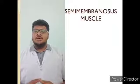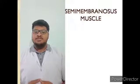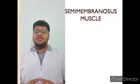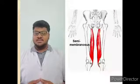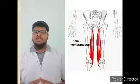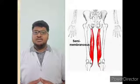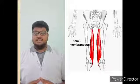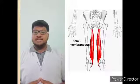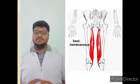Here we are going to discuss about the semimembranosus muscle. Semimembranosus muscle is so named because it has a flat tendon of origin. It lies posteromedially in the thigh, deep to semitendinosus.